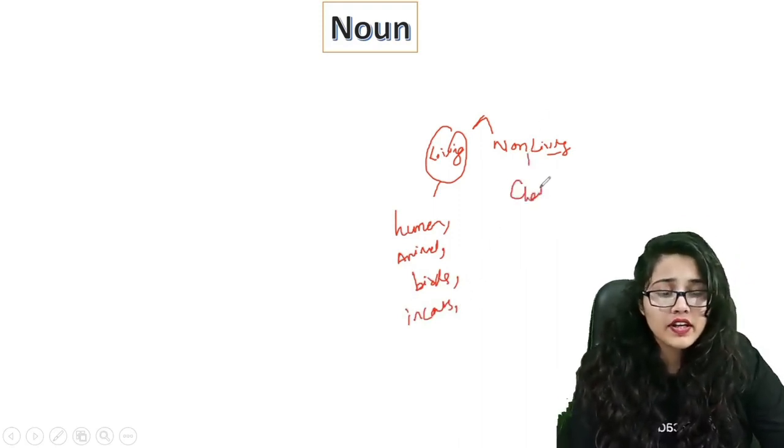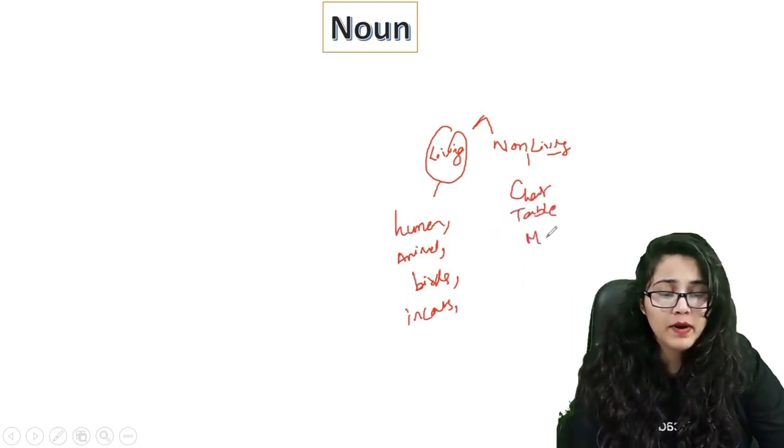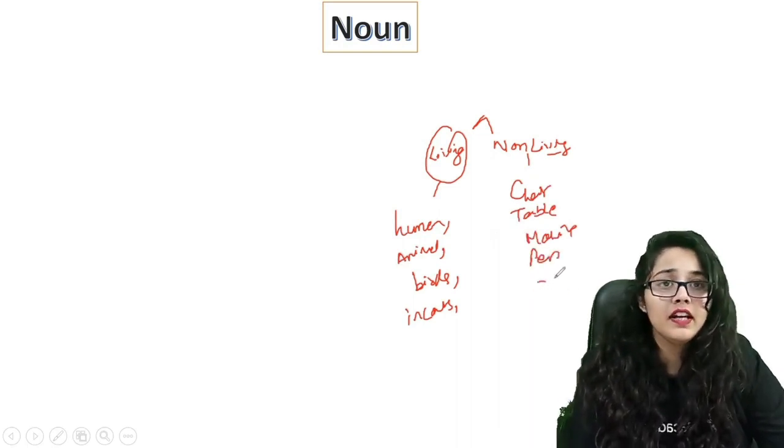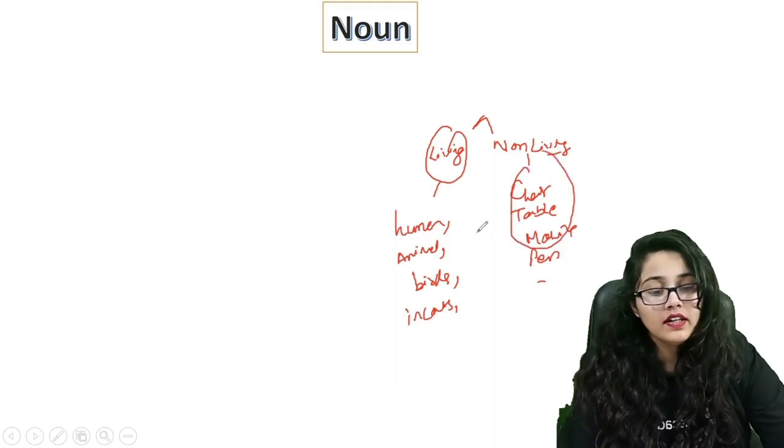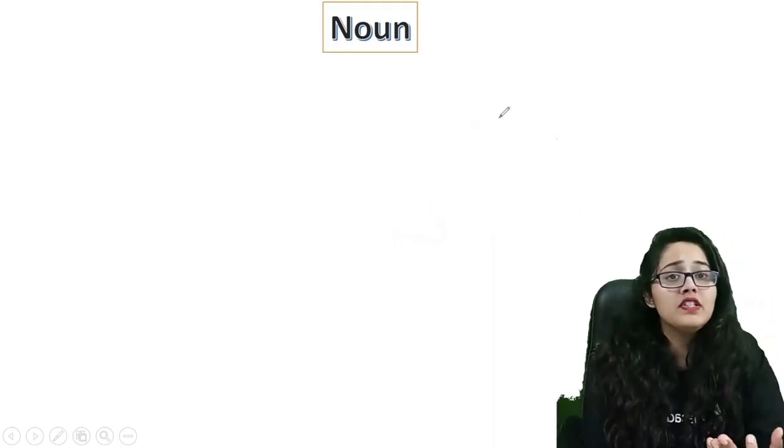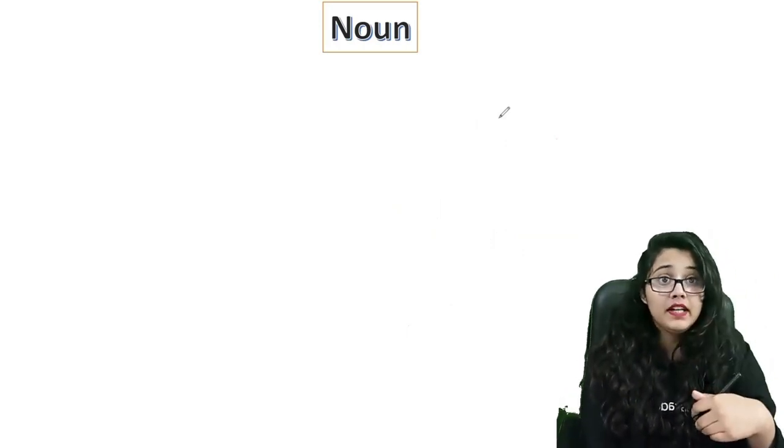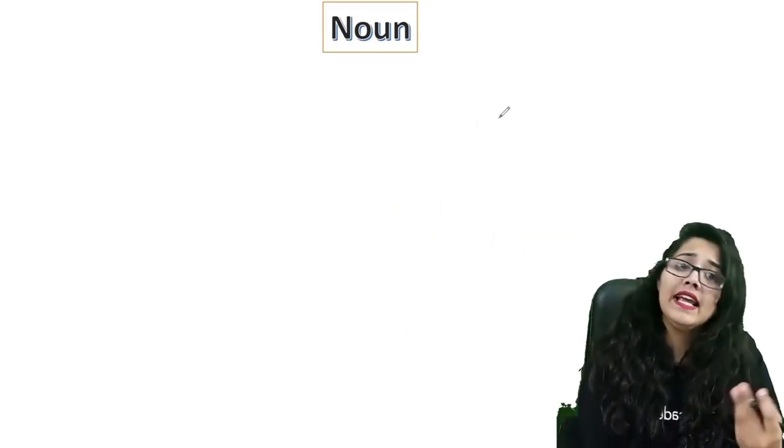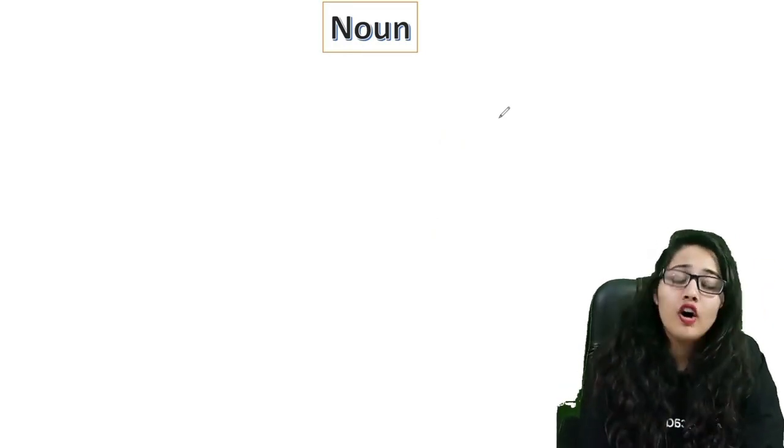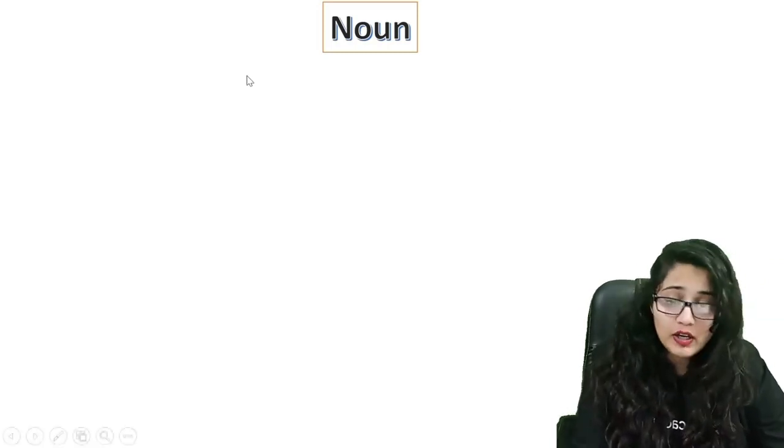In non-living, we have chair, table, mobile, pen, etc. Now, whatever we can see around us, everything is noun. If you speak a noun, what will it be? It will be the name of a person.